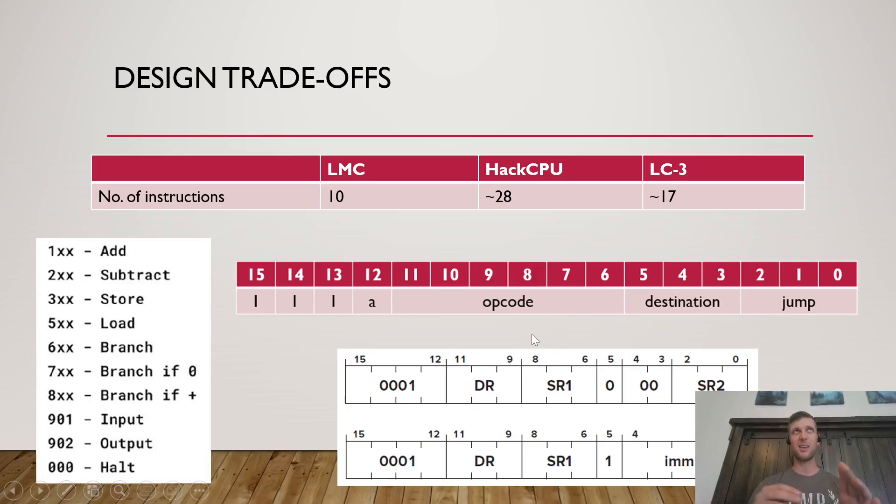I list 17 there because I think there are 15 official opcodes that are valid, but you can see for here this is the add instruction. I can use bit number five to specify whether my second operand is a source register or an immediate. So that's kind of like almost to me like two different instructions or two flavors of the same instruction. So when you add those in, we get about 17 for the LC3. Why does this matter?